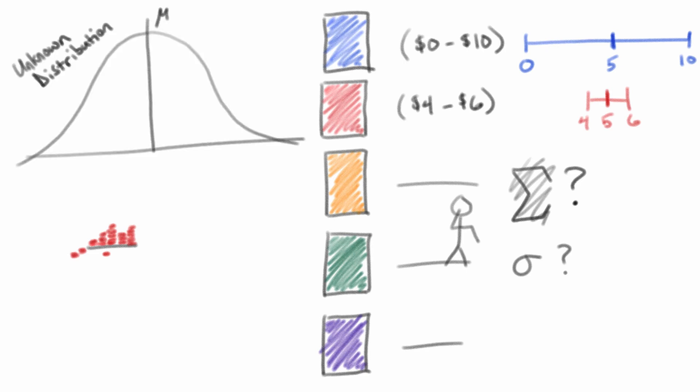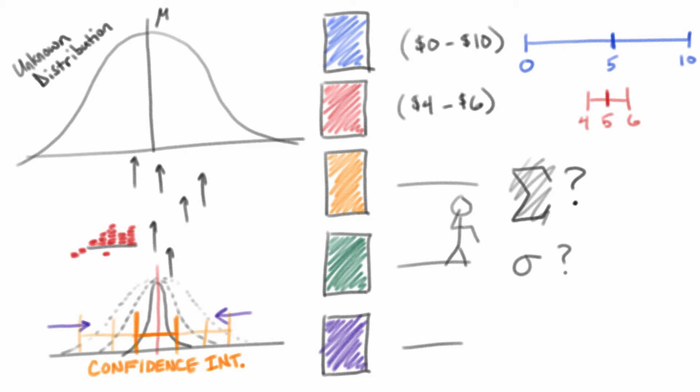However, as we sample from an unknown distribution, we know that the average of the values we observe will get closer and closer to the average of that unknown distribution that we're sampling from. But what does closer and closer mean? Well, as we collect these samples, we can also calculate a confidence interval for our estimate of that value.